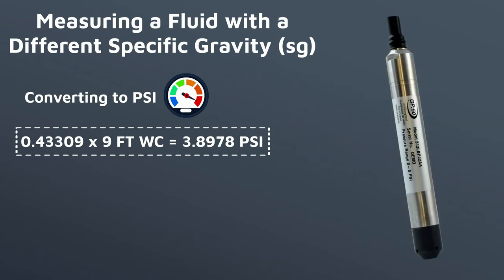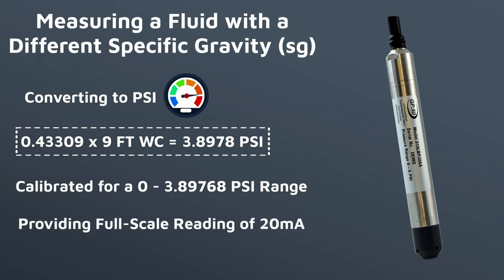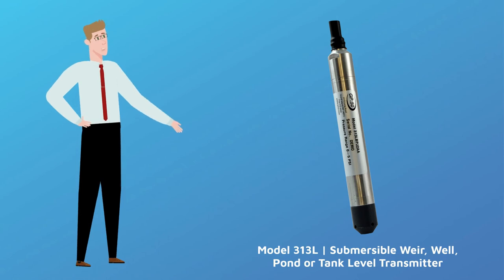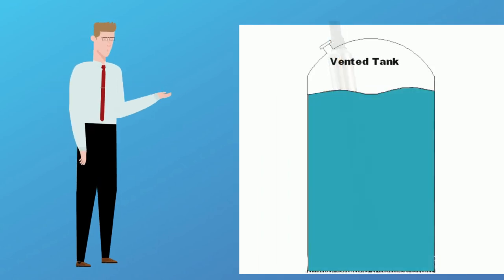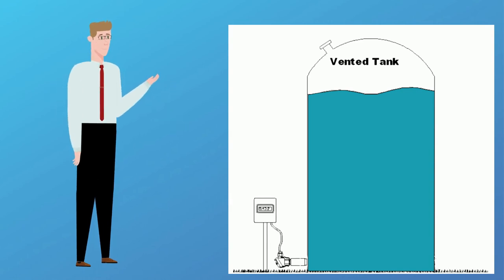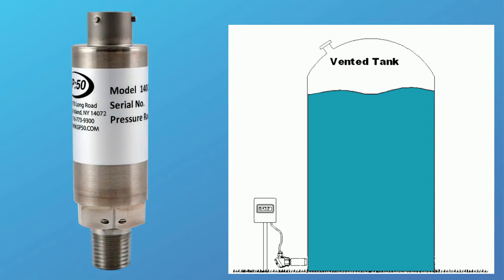The level transmitter will then be calibrated for a 0 to 3.89 psi range and provide a full scale reading of 20 milliamps when the tank of oil is full. This example uses a submersible level transmitter. However, you can also install a pressure transmitter outside the tank wall via a feed-through fitting at the base of the tank. Once the transmitter's process port is installed on the feed-through line, it will sense the head pressure in the same way the submersible transmitter does and provide a head pressure reading.